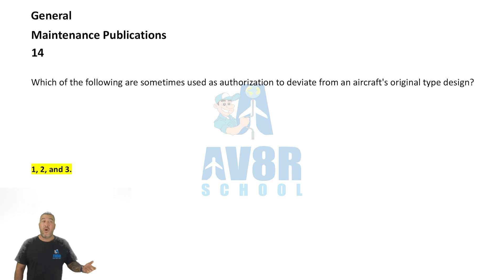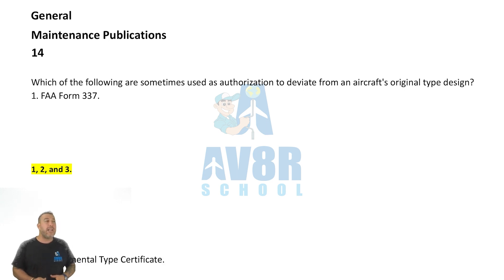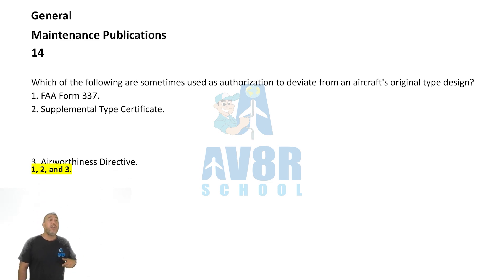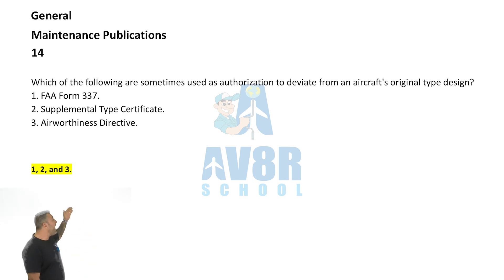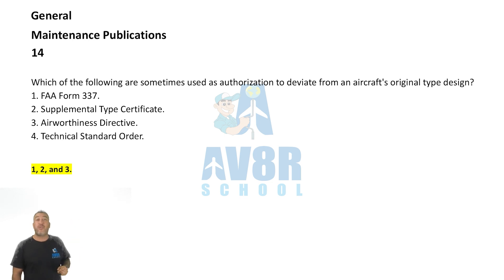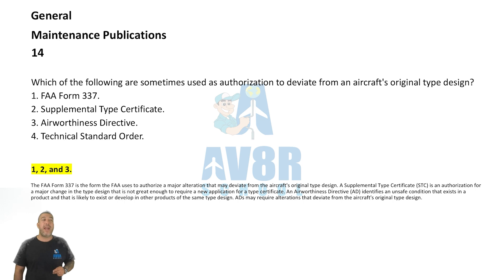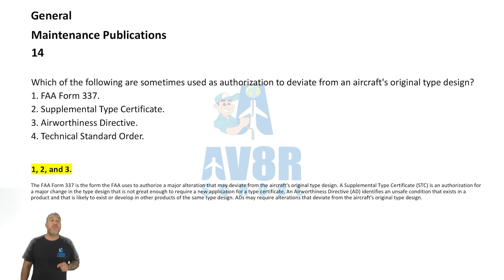Number 14. Which of the following are sometimes used as an authorization to deviate from an aircraft's original type design? The answer is 1, 2, and 3: FAA Form 337, a supplemental type certificate, and an airworthiness directive. Any one of these can be used as authorization to deviate from an aircraft's original type design.